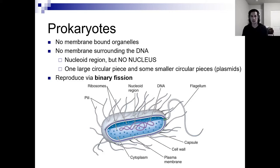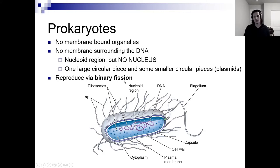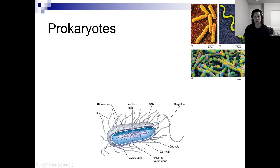Eukaryotes — or humans, for example — have linear DNA, whereas most bacteria will have circular DNA. Instead of reproducing via mitosis and cytokinesis, bacteria undergo binary fission, where they just divide down the middle and the cell splits. Their genetic material divides, but their nucleus doesn't split because they don't have a nucleus.